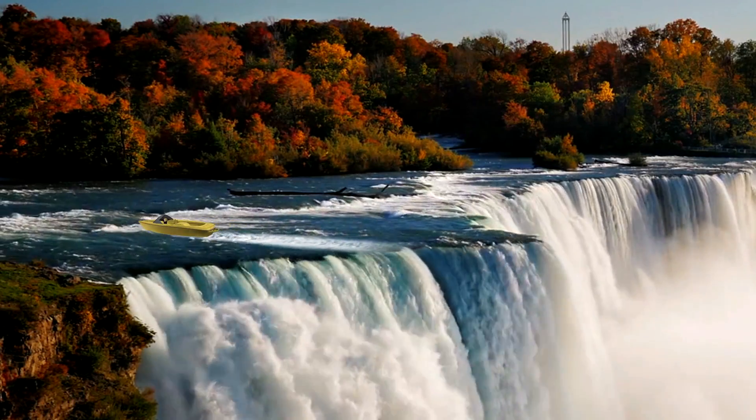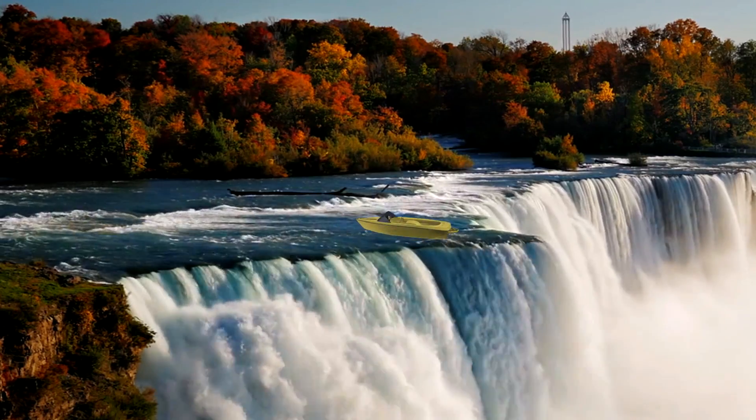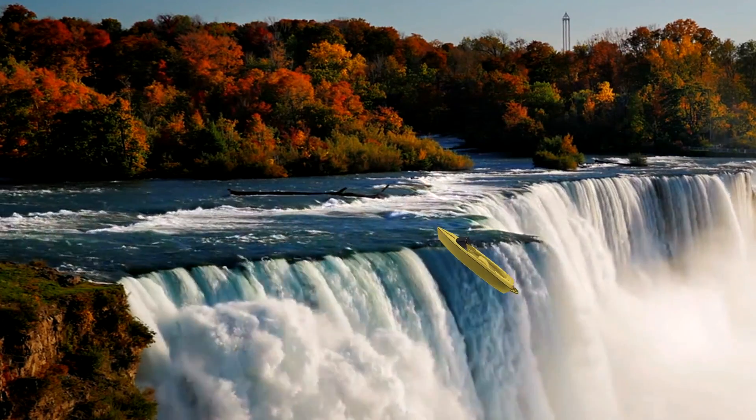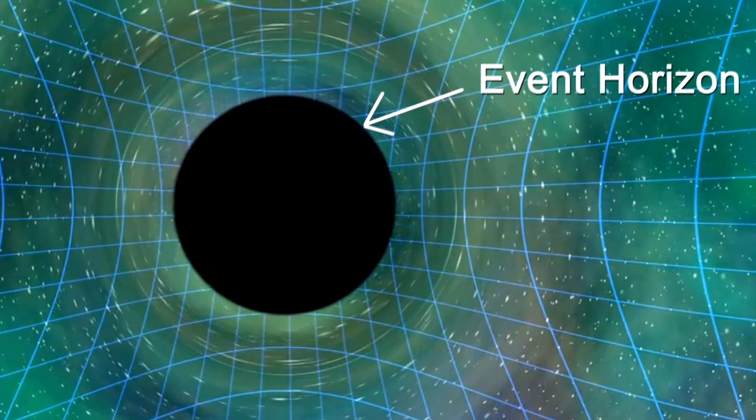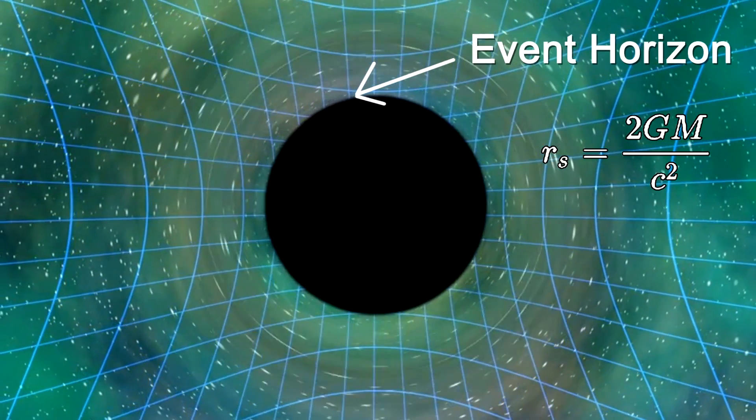The event horizon is like the edge of a waterfall, beyond which space is actually falling in faster than the speed of light. The radius of an event horizon is called a Schwarzschild radius and it's defined by this equation.